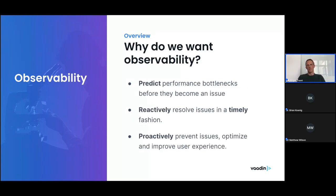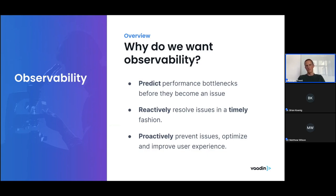So why do we want all of that? Ideally, we would want to predict when a performance bottleneck is coming up before it becomes an actual issue — before the system crashes, before it gets painfully slow. Ideally, we also want to react before users notify us of problems, react in a timely fashion, start analyzing the issue, and resolve it quickly by having the necessary data available. And if you really love your users, you can use all of that information to proactively optimize the system — continuously check what are the slowest functionalities, the slowest views, and what you can do to improve user experience and focus your development efforts.